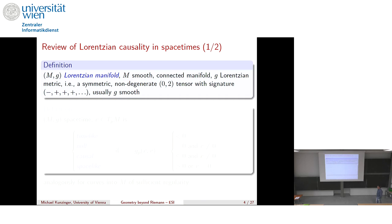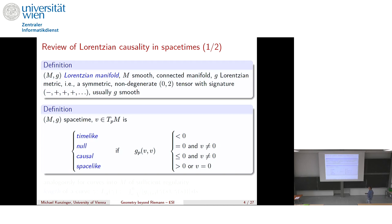Let me briefly recall Lorentzian causality theory. If (M, g) is a Lorentzian manifold with signature (−, +, …, +), you can distinguish tangent vectors: time-like if g(v,v) < 0, null if g(v,v) = 0 and v ≠ 0, causal if g(v,v) ≤ 0 and v ≠ 0, and space-like if g(v,v) > 0. This has direct meaning in relativity: time-like curves correspond to subluminal motion and null curves to light.